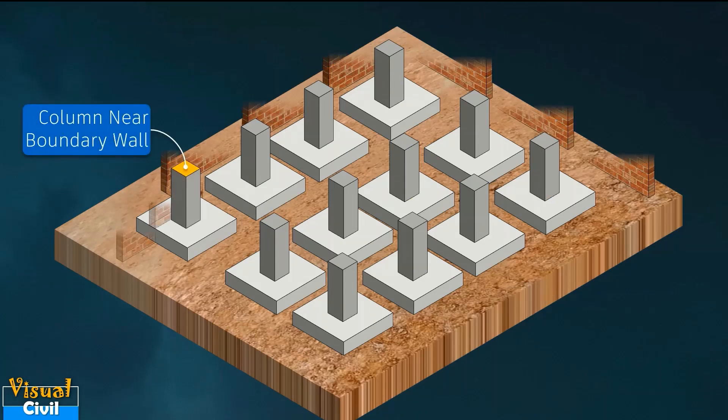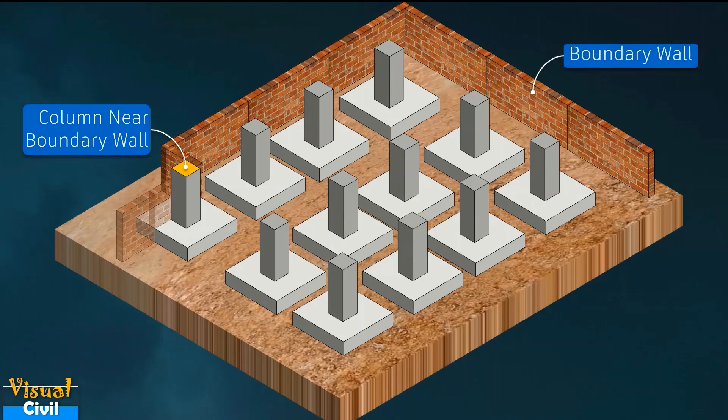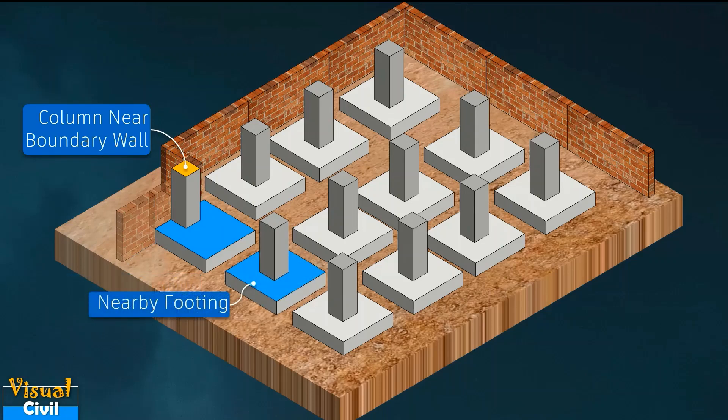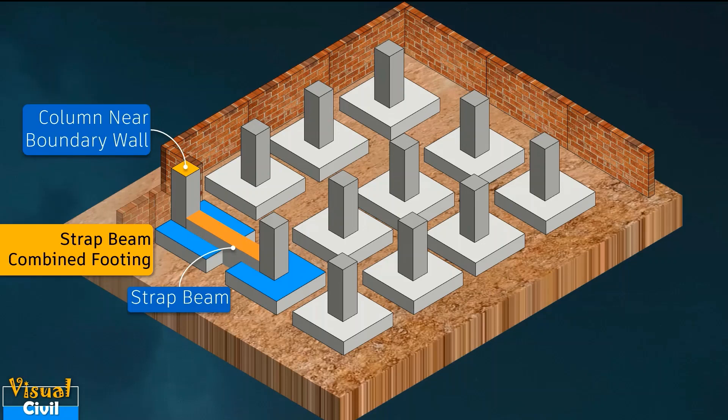In case a peripheral column is placed near to the property line, then footing needs to be designed as eccentric footing. If there is a nearby column, then this eccentric footing will be connected to that column footing with a beam to restrain the overturning effect. This type of combined footing is called as strap beam footing.